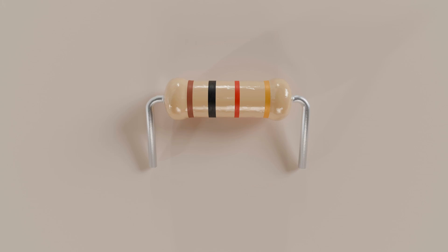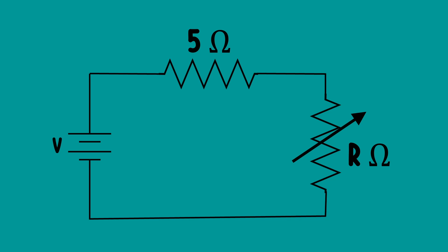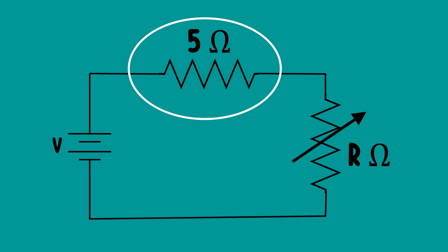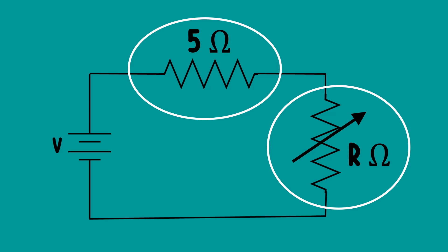Resistors are electrical components that have a fixed value of resistance. We also have a variable resistor where the electrical resistance value can be adjusted. Now, let's talk about Ohm's law.